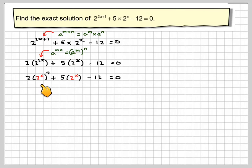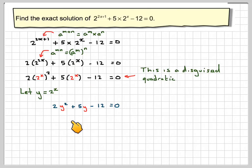Now if I replace 2 to the x with a different variable like y, then I'm going to get a quadratic equation which I can solve. So this is known as a disguised quadratic. So let y be equal to 2 to the x. So replacing the 2 to the x with y, we get 2y squared plus 5y minus 12 is equal to 0.